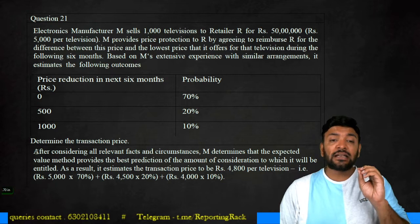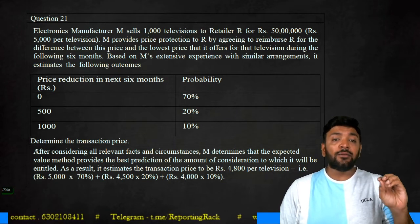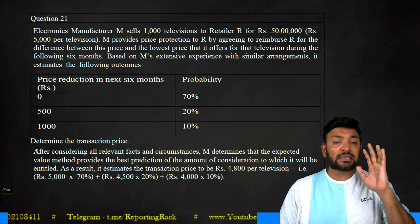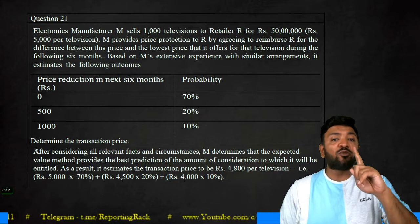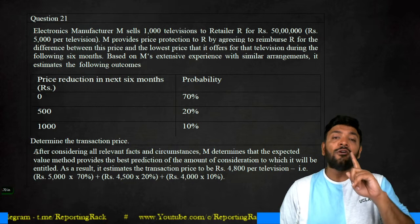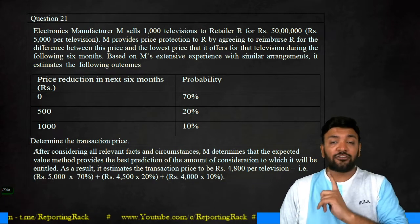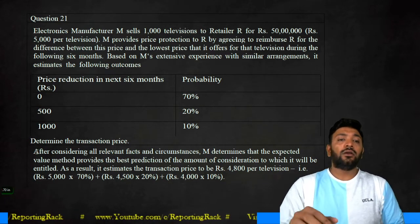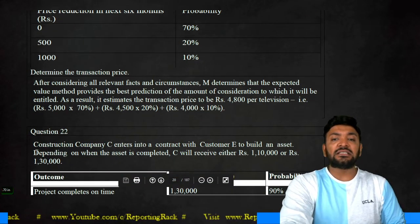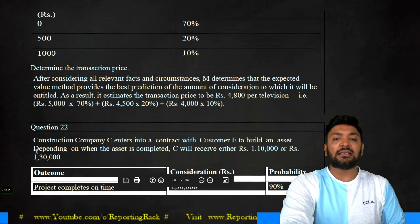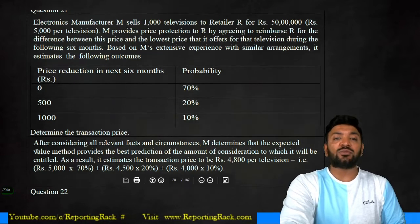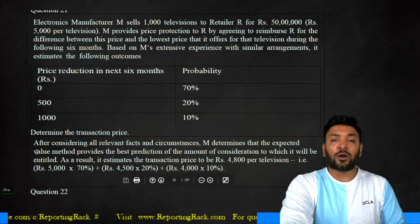That is the expected value, or the transaction price at which manufacturer M shall recognize revenue. So manufacturer M will recognize revenue for 1000 televisions at the rate of 4800 per television. Therefore, revenue will be recognized to the extent of 48 lakhs and not 50 lakhs. The expected value is 4800 per television multiplied by 1000 televisions sold to retailer R. Therefore, the answer is 48 lakhs.